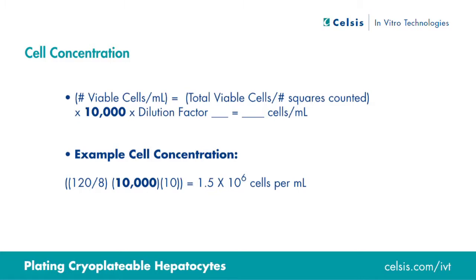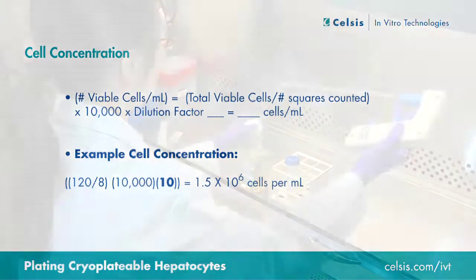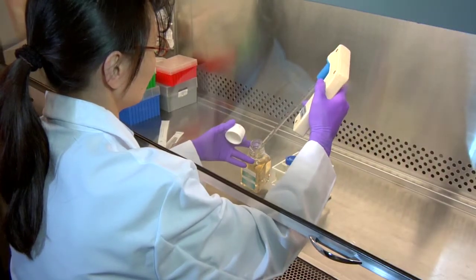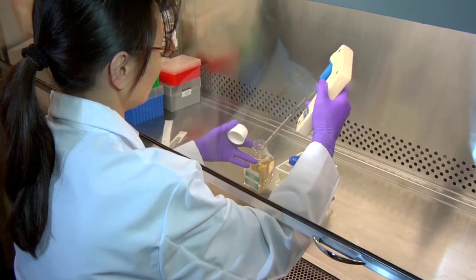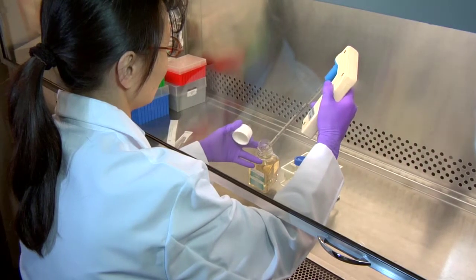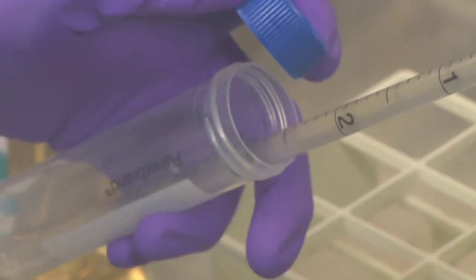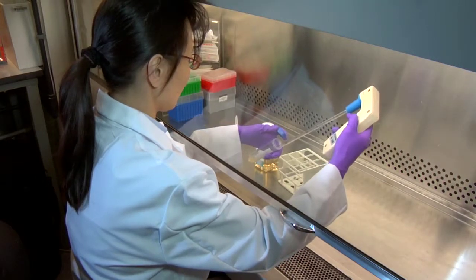This number is then multiplied by the cell dilution factor of 10. The result will provide the total number of viable cells per milliliter. Remember, before we counted the cells, they were added to 5 milliliters of in vitro growth CP medium. 100 microliters of the cell suspension were used for counting via the Trypan Blue method.